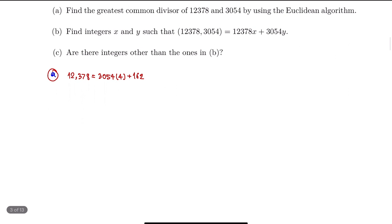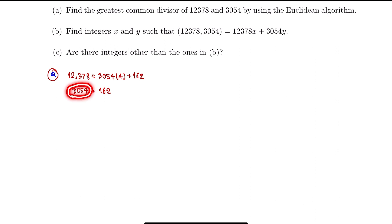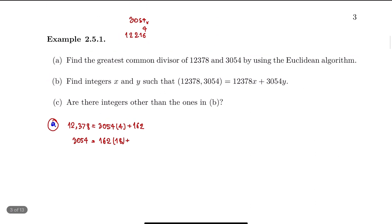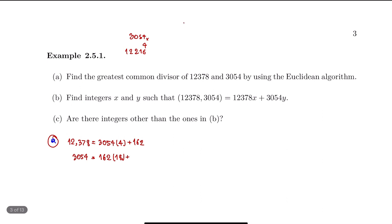Then we divide 3,054 by 162. We need to find the quotient of 3,054 divided by 162. Let's try 18 — so we try to find the remainder. 162 times 18...